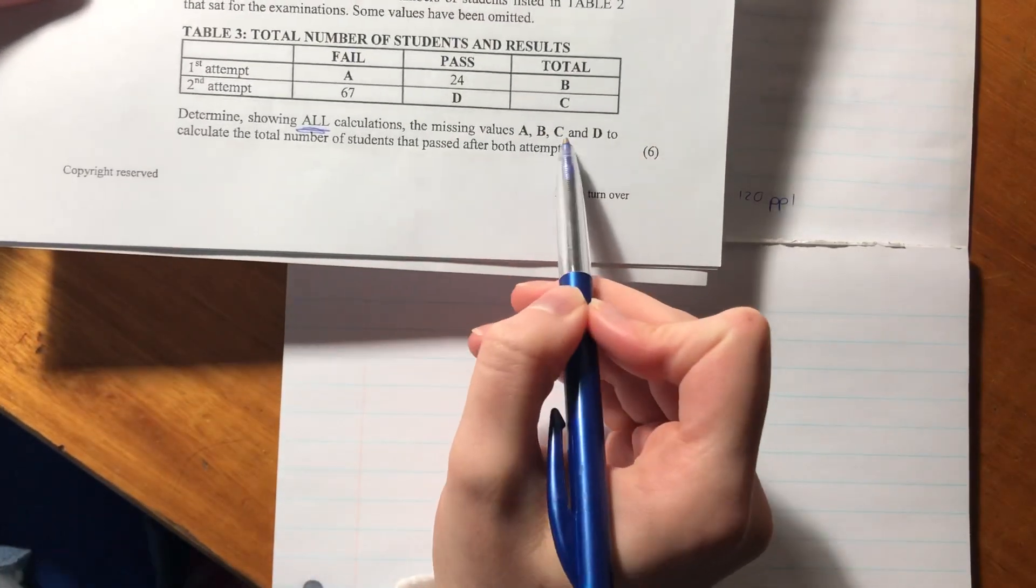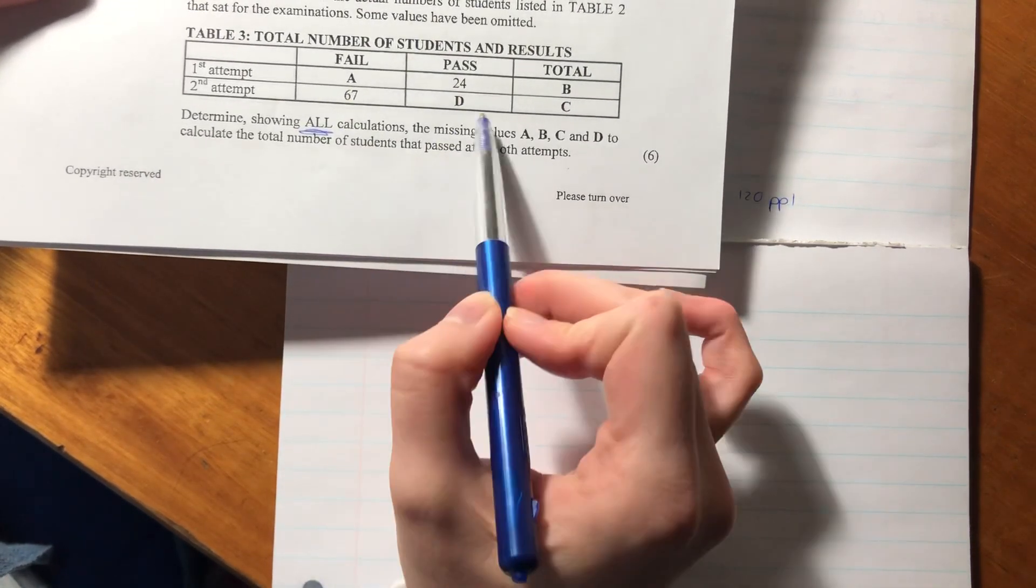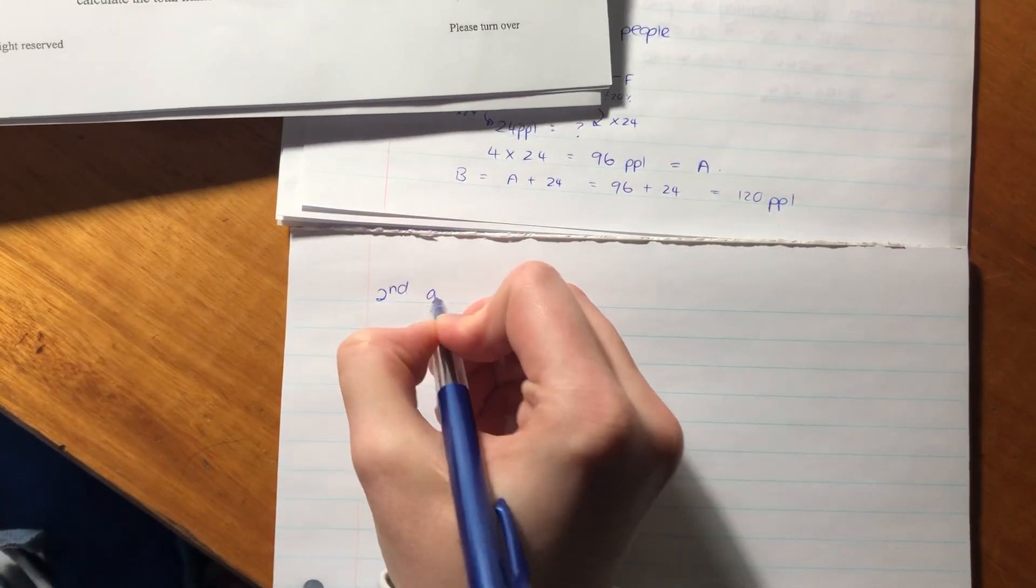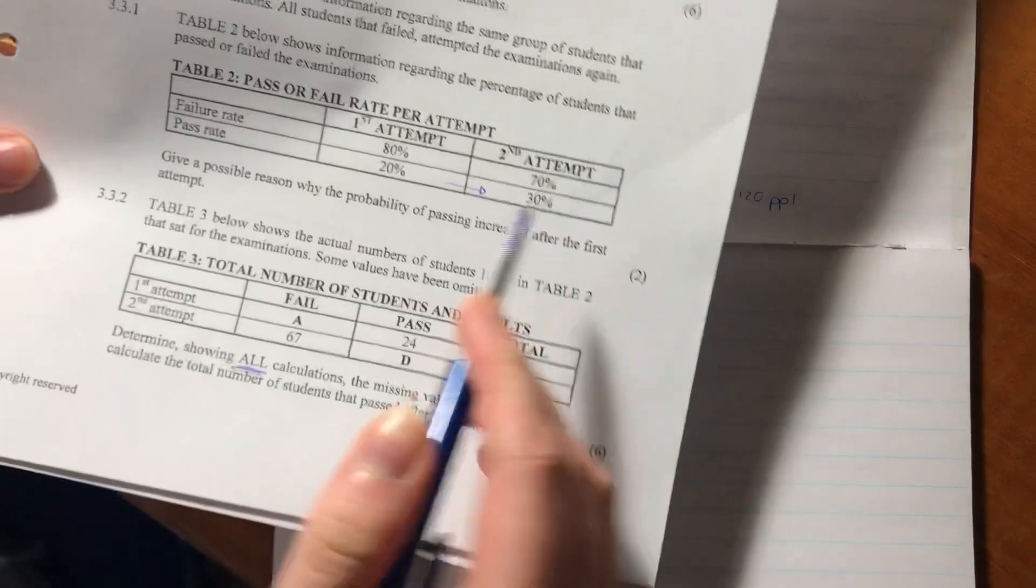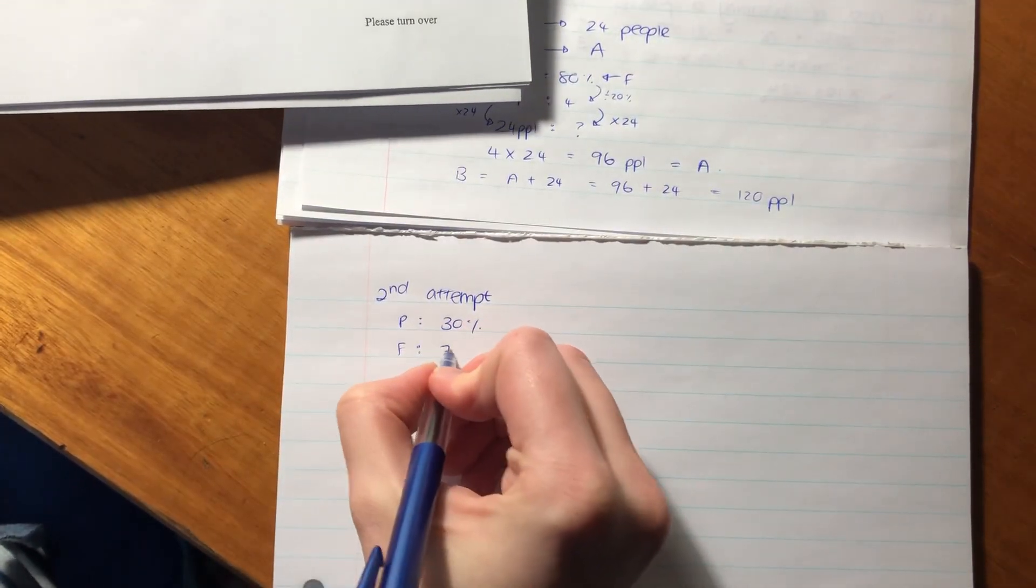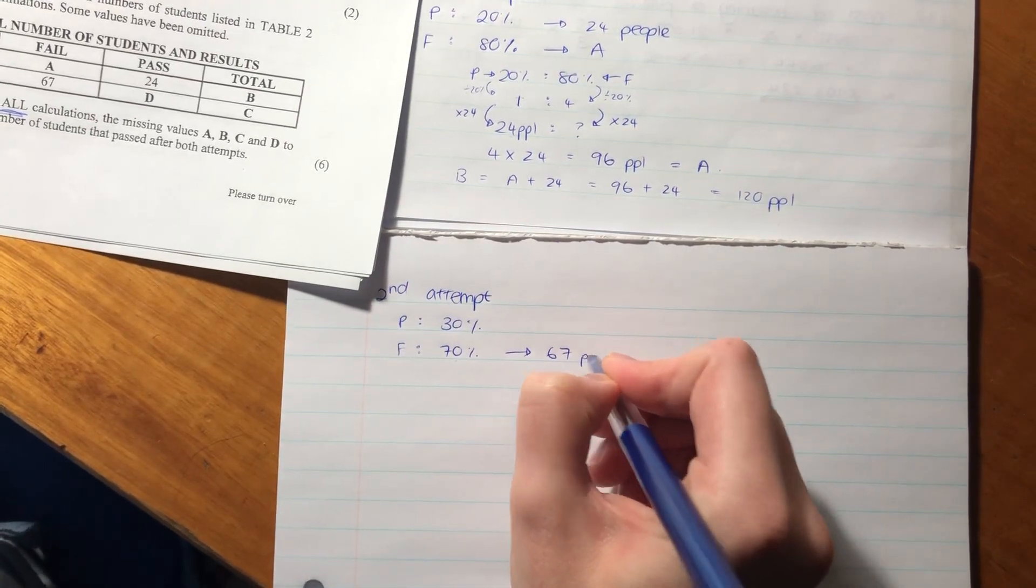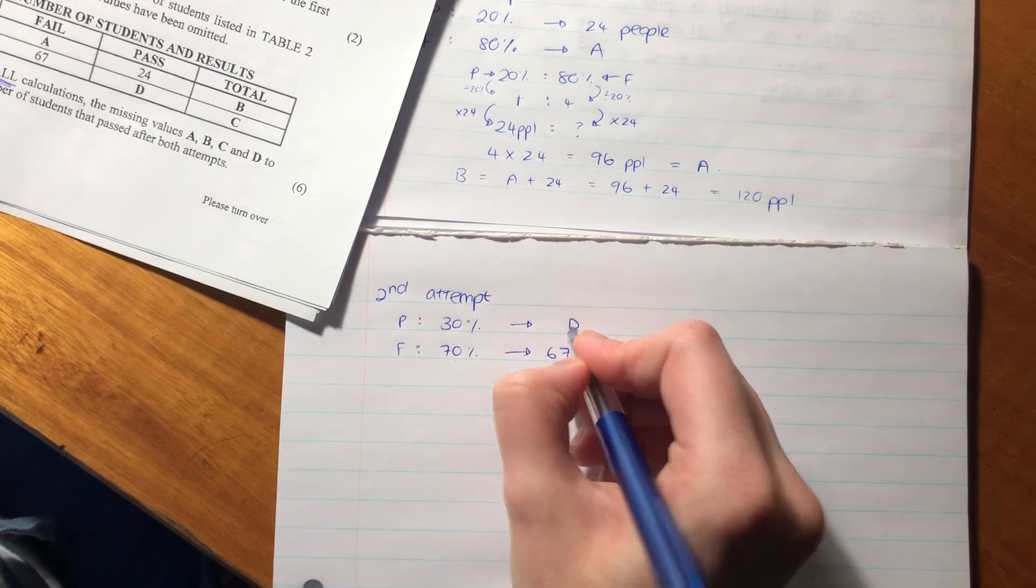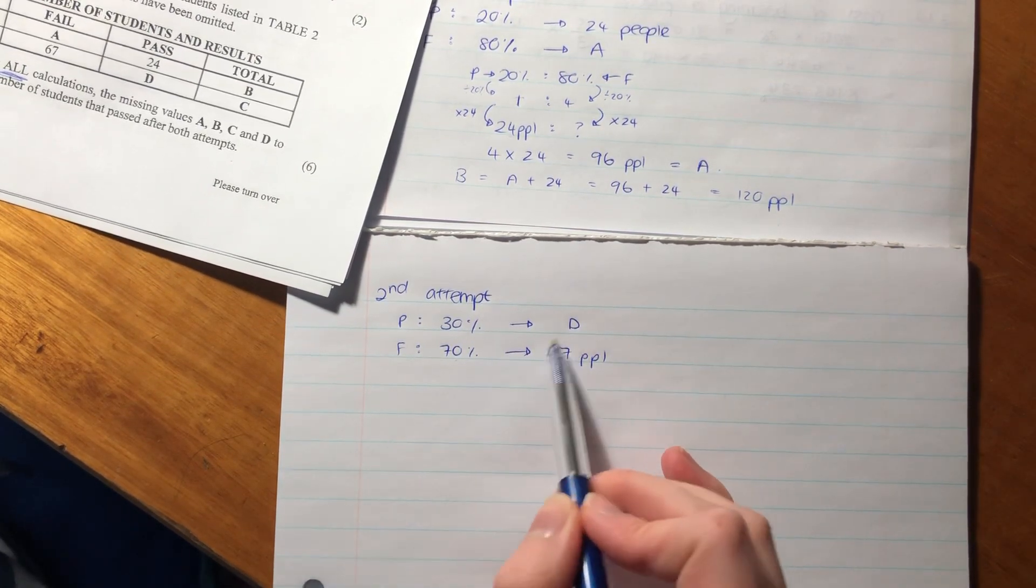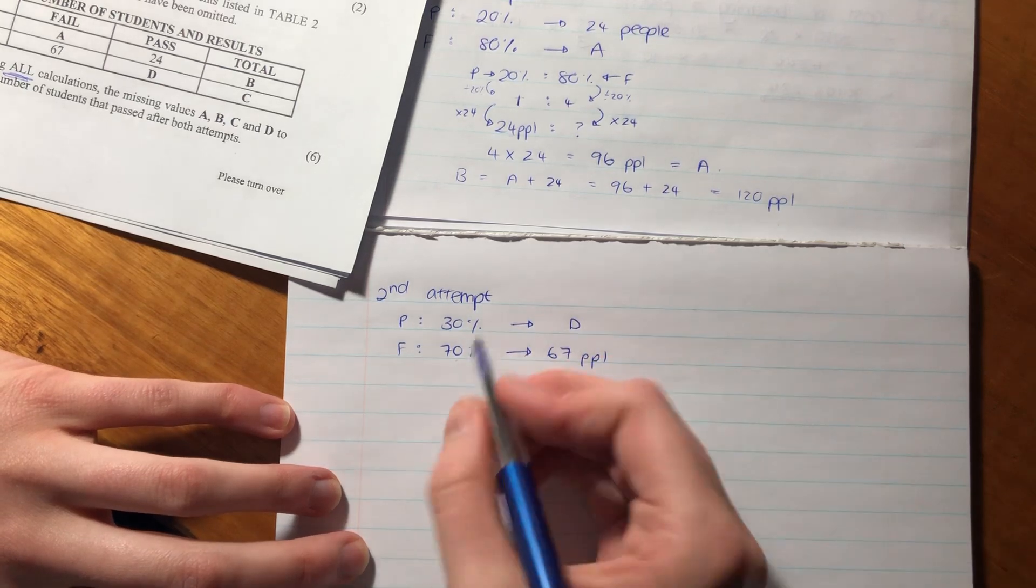Now we need to get C and D. I'm going to look at D before C, because C is just a sum of D and 67. Now we're looking at the second attempt. The percentage of people that passed was 30%, and the number that failed was 70%. We know the number of people that failed is 67 people, and the 30% is D.